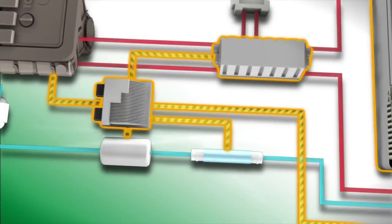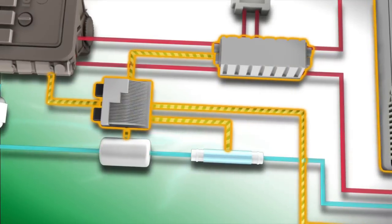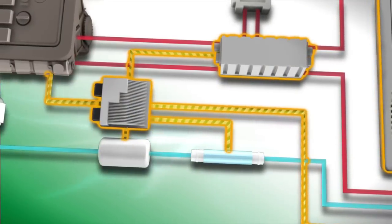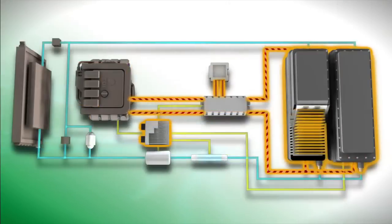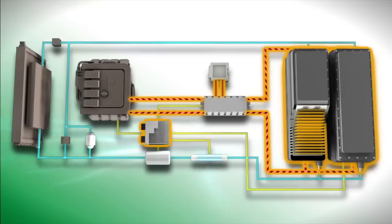It communicates back through the controller area network to provide the driver with system information such as the charge level of the battery. Dow Kokum's digital vehicle management system is monitoring the voltage and current flow into the batteries to prevent overcharging.